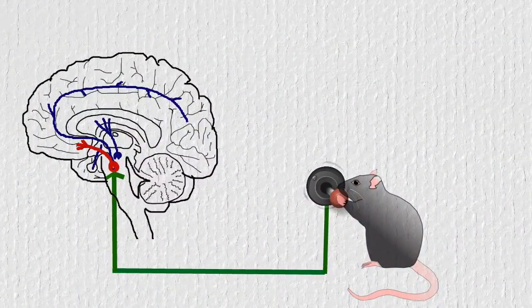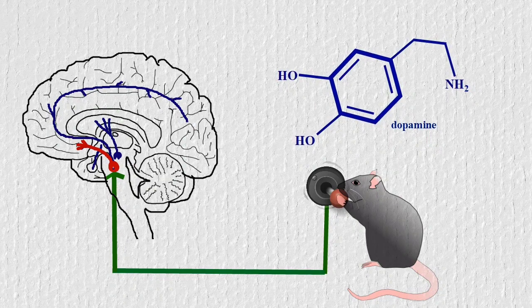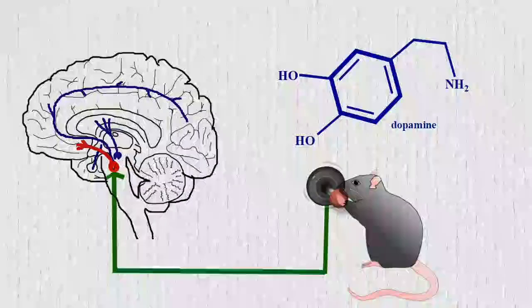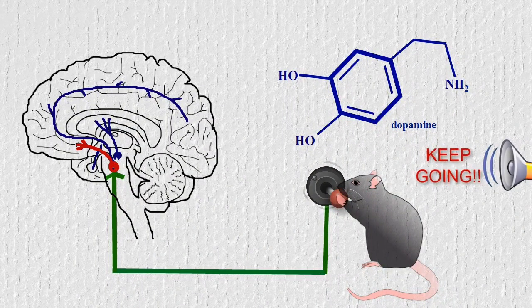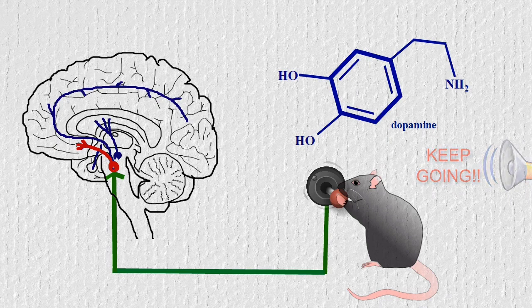So what about the rats in the experiment? They got confused. The release of dopamine when pressing the lever makes them feel that this is exactly what they should be doing, and their brain, or let's say their dopamine, tells them keep going. But whether they actually also experience pleasure at the same time remains unclear.